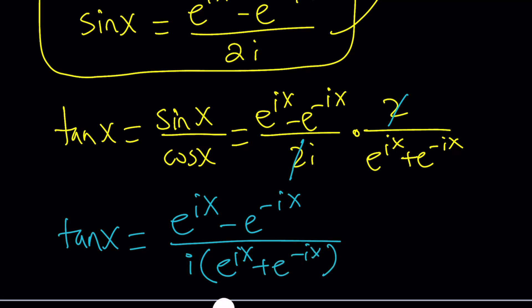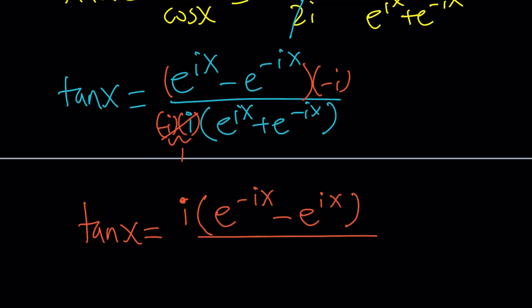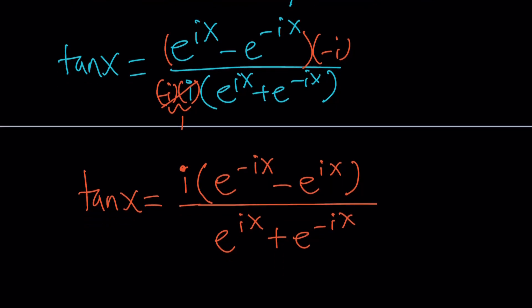Now let's go ahead and divide these equations, sine divided by cosine. Tangent is equal to sine x divided by cosine x. Let's write the sine x first, and then we're going to flip the second one and multiply. Let's simplify this a little bit. The 2s are going to cancel out, and I'm going to get rid of the i at the bottom.